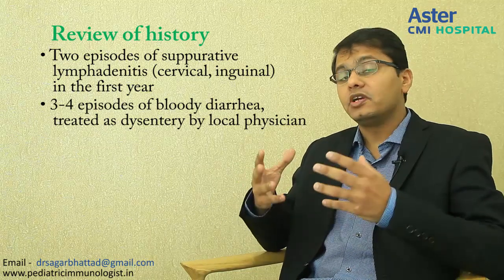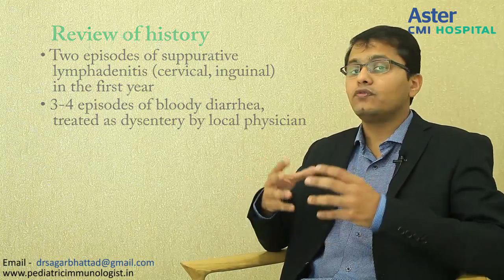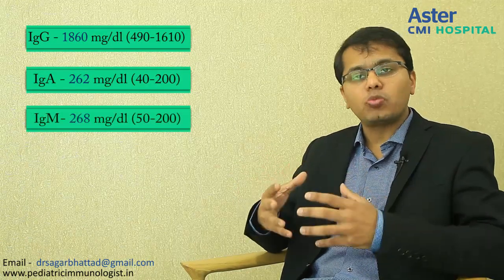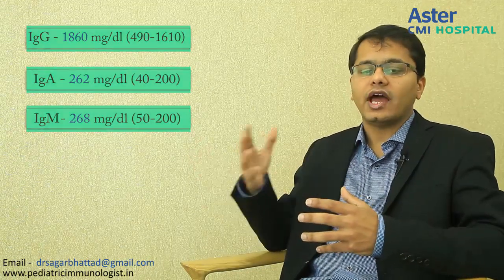Subsequently, this boy also had 3 to 4 episodes of bloody diarrhea which were being treated as dysentery by a local physician. If you see a child who comes to you with pneumonia, suppurative lymphadenitis, and repeated episodes of diarrhea, we have to think of an immune deficiency. From my previous presentations, you know that immunoglobulin profile carries paramount importance. So we asked for an immunoglobulin profile. But to a surprise, the IgG came very high at 1860, the IgA was high, the IgM was high, and this boy had marked thrombocytosis and leukocytosis.